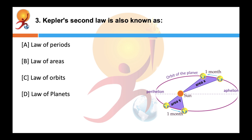Kepler's second law is also known as? Correct answer is the law of areas. Kepler's second law of planetary motion describes the speed of a planet traveling in an elliptical orbit around the Sun. It states that an imaginary line joining a planet and the Sun sweeps out equal areas in equal amounts of time — that is, the areal velocity of the planet around the Sun is constant. The speed increases as it nears the Sun and decreases as it recedes.